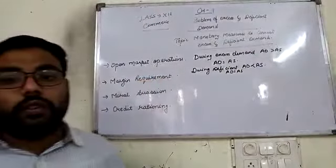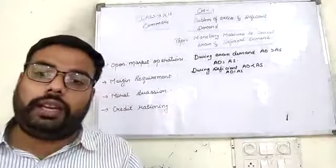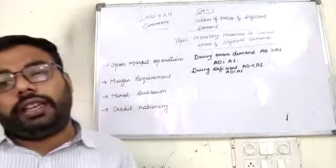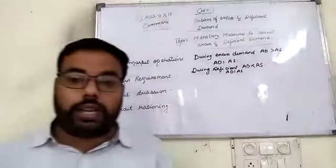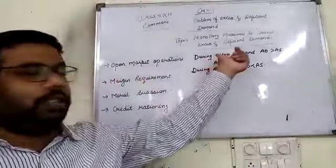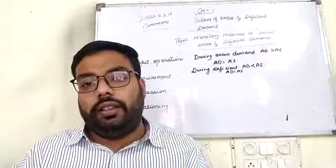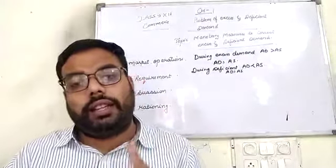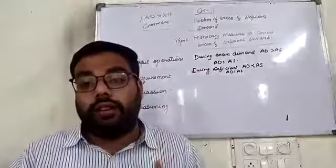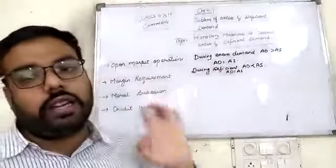Next is Moral Suasion. Moral Suasion is a moral appeal by a central bank to its member banks. The central bank makes a moral appeal to its member banks that during excess demand, they should be very strict while giving credit, and during deficient demand, they should be very liberal and follow easy terms and conditions while giving credit.